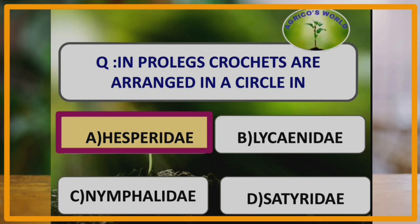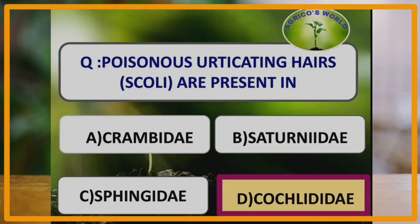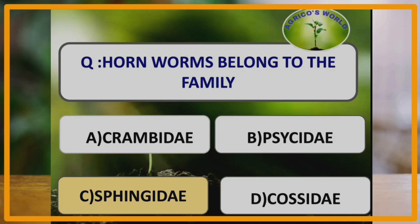In prolegs, crotchets are arranged in a circle in the family Hesperiidae, which is a skipper family belonging to the order Lepidoptera. Poisonous articulating hairs called scoli are present in the family Cochlearidae.